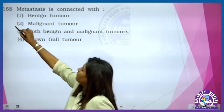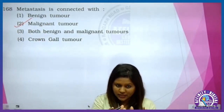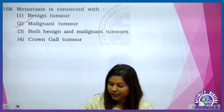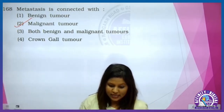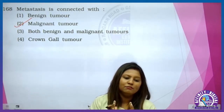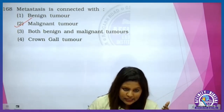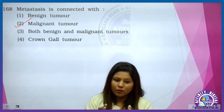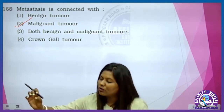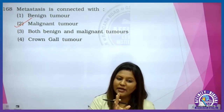Metastasis — jab ek neoplasm, that is the mass of abnormal cells, wohan se toot ke aur jagah mein jata hai blood stream ke through — we call this metastasis. Metastasis is the sloughing off of the cell from the primary neoplasm and moving to a distant place with the help of the blood stream. It is called metastasis.